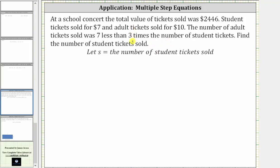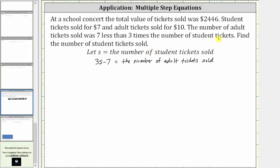Three S represents three times S, and therefore seven less than three times S is the expression 3S minus seven. So 3S minus seven is equal to the number of adult tickets sold. From here, we'll write a value equation that we can solve for S to determine the number of student tickets sold.